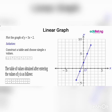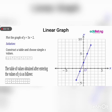Moving on, we can look at linear graphs — this is very easy. They give you a linear equation; in this case, y = 3x + 2, and we are told to construct a linear graph. We take values of x from −2 to +2, that is x = −2, −1, 0, 1, and 2. Now you have to substitute.